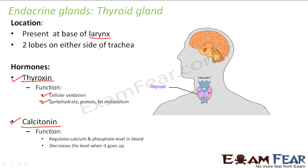The second hormone is calcitonin. As the name suggests — 'calc' — it is related to calcium. It regulates the calcium and phosphate level in blood. Calcium and phosphorus are needed for purposes like development of bones, but when their level increases too much, that is harmful. Everything in the body should be present in the desired amount — neither more nor less. So whenever the level of calcium and phosphate increases in blood, calcitonin decreases their level.